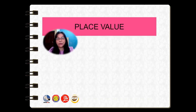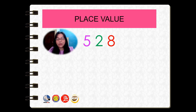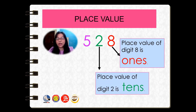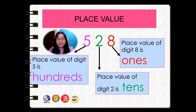Let's look at the place value of these three digits — five hundred and twenty-eight. What is the place value of eight? Place value of eight is ones. What is the place value of two? Place value of digit two is tens. What is the place value of digit five? Place value of digit five is hundreds. Notice that when we talk about place value, it is expressed with words: ones, tens, and hundreds.